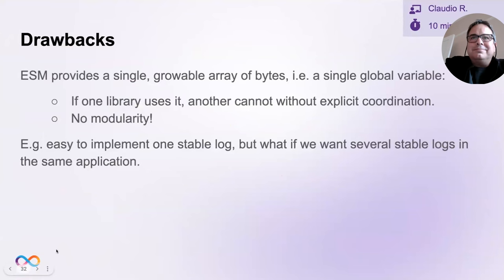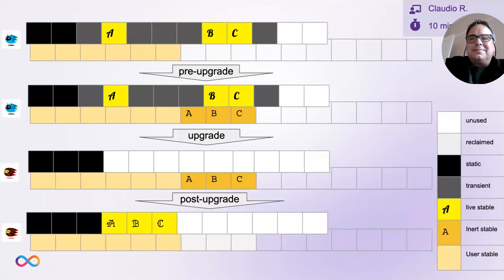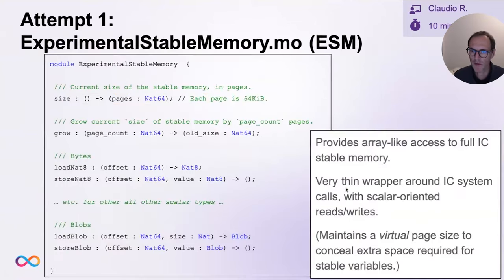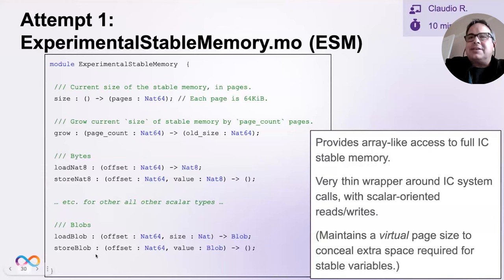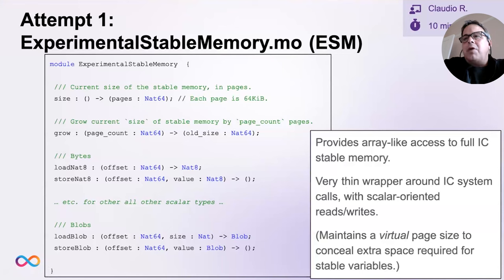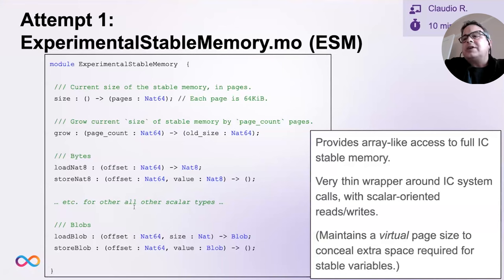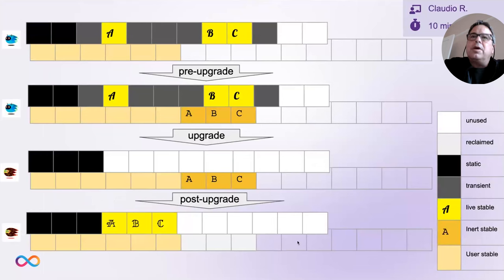In our calculator example, it would be easy to implement one stable log, but if we then wanted to add further logs or other stable data structures, it'd be much harder. Our second attempt to improve the situation is to generalize from one single memory to a bunch of little memories we call regions. The API is very similar to experimental stable memory, except instead of having just one memory, we have multiple regions. Regions are allocated by calling region.new, which gives you a fresh region that nobody else has access to unless you hand them access. Every operation to read and write the region takes an additional argument — the region you want to operate on — so you can think of regions as capabilities.